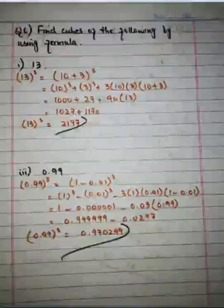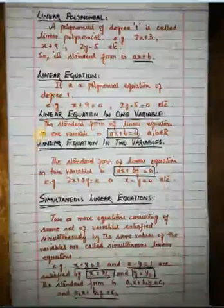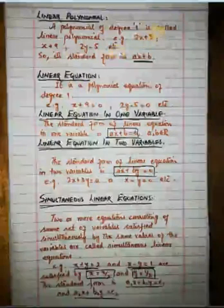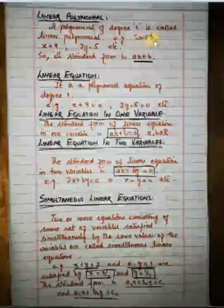Complete exercise 6.7 on your assignment sheets. Now let's revise the definition of the linear polynomial from chapter number 5. A polynomial of degree 1 is called a linear polynomial — for example, 2x plus 3, x plus 9, 2y minus 5, etc. A polynomial is an expression in which the exponents of the variables are whole numbers. In 2x plus 3, the exponent of x in the first term is 1, and in the second term there is no x, meaning it can be written as x power 0, so the exponent is 0. Both 1 and 0 are whole numbers, so 2x plus 3 is a polynomial.